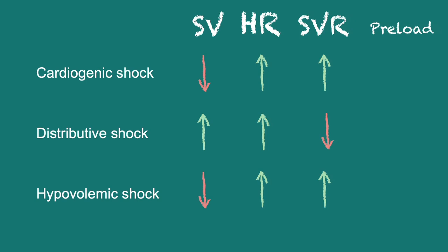Now let's add a column for preload, which differentiates cardiogenic and hypovolemic shock. In cardiogenic shock, the preload is high, whereas in hypovolemic shock, the preload is low and actually causes the primary insult. For distributive shock, preload actually drops because the blood vessels are leaky in addition to being dilated, so the amount of blood volume in the circulation drops, similar to hypovolemic shock but for different reasons. Take a moment to draw the chart and quiz yourself by starting with the primary insult for each type of shock and predicting the compensatory changes.